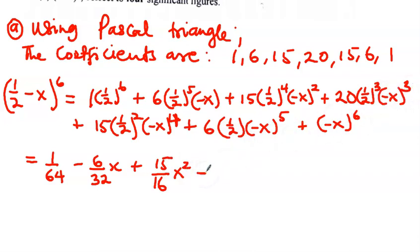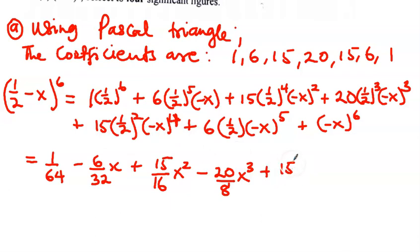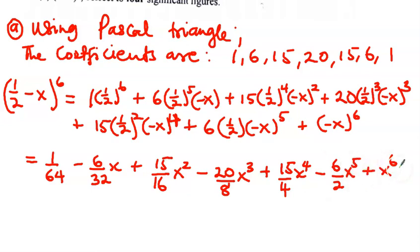The cube term: (-x)^3 is negative, so we get minus 20/8 x cubed. Then plus 15/4 x to the power 4. Then minus 6/2 x to the power 5. And the last term is plus x to the power 6.